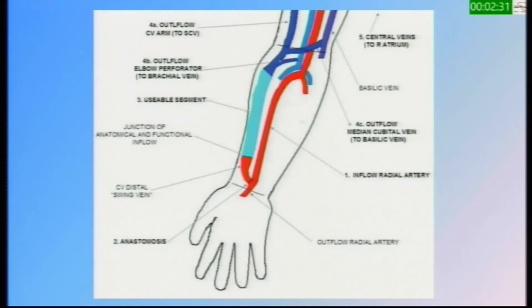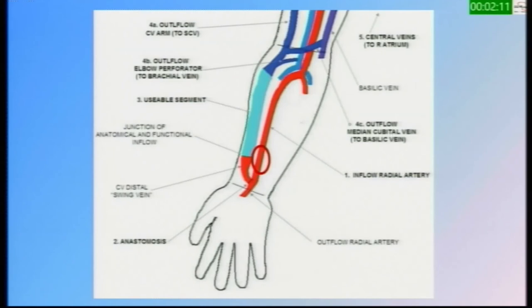If the endovascular option is not available, is there a role for other modalities to salvage the fistula? Yes. Consider this example of a radio-cephalic AV fistula occluded due to anastomotic line stenosis or juxta-anastomotic stenosis. If we perform re-anastomosis here, is it a new fistula or salvage of the old one? It is still salvage, because it is still a radio-cephalic fistula and we use the same vein that is already mature.